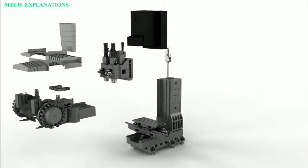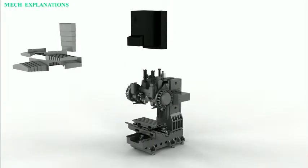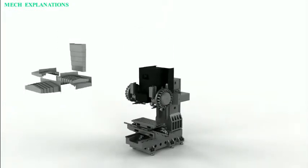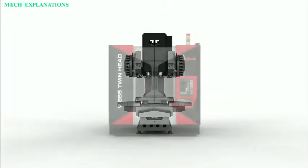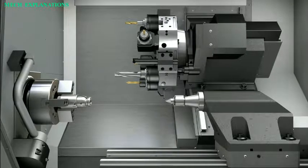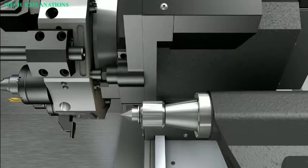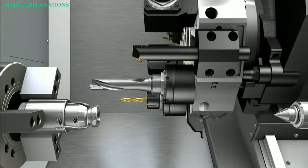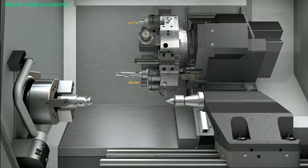The parts mechanical dimensions are defined using computer-aided design software, and then translated into manufacturing directives by computer-aided manufacturing software. The resulting directives are transformed by post-processor software into the specific commands necessary for a particular machine to produce the component, and then are loaded into the CNC machine.